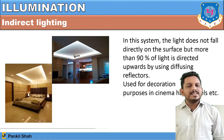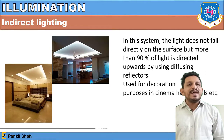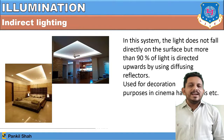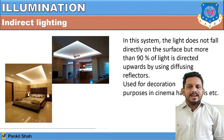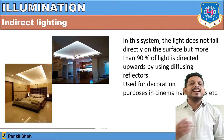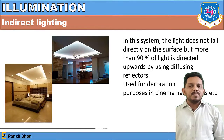In indirect lighting, the light does not directly fall on the surface. More than 90 percent of the light is directed upwards using diffusing reflectors. The light is diffused to some other place and then reaches the object. This type of system is used for decoration purposes in cinema halls and various places.